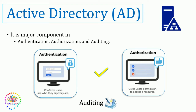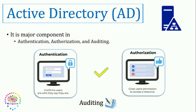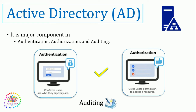Authorization gives users permission to access resources. Like what tasks you can do — these are provided through authorization. Auditing: once the user is logged into the system by authenticating themselves by providing their credentials and they have their proper rights, whatever they do on that system once they're logged in is recorded under auditing — like what applications the user uses or what changes they have made on the system. These things are handled by Microsoft Active Directory.